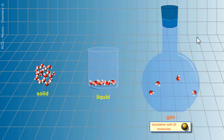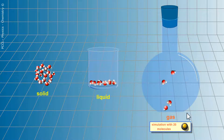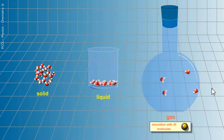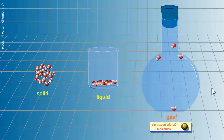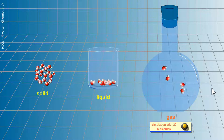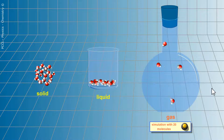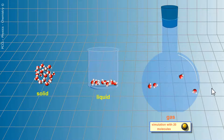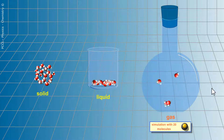In the gaseous state, the molecules are no longer in contact. There is a lot of vacuum between the molecules — a lot of space. They move at very high speed and are far from each other. So here we'd have water vapor inside that flask.